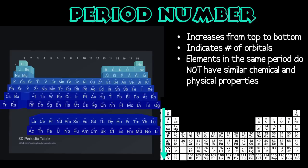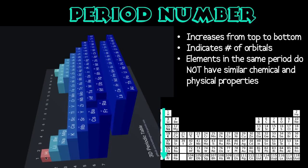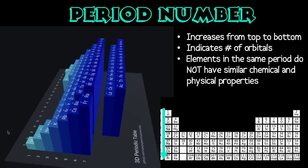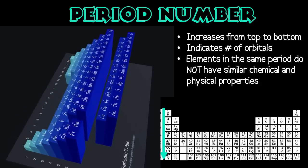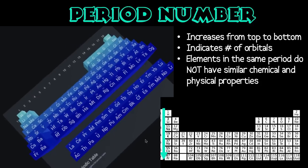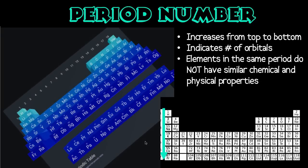The period number in the periodic table refers to the horizontal rows and increases as we go from top to bottom. The period represents the number of orbitals an atom has. So all period one elements — hydrogen and helium — have one orbital. All period two elements have two orbitals, all period three elements have three orbitals, and so on. Unlike groups, however, the elements in the same period have very little in common apart from the number of orbitals.